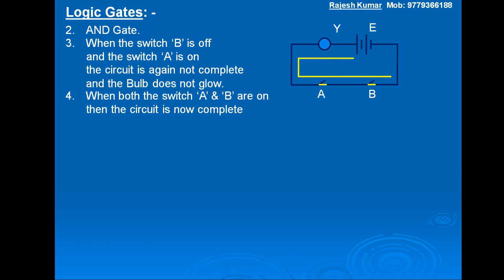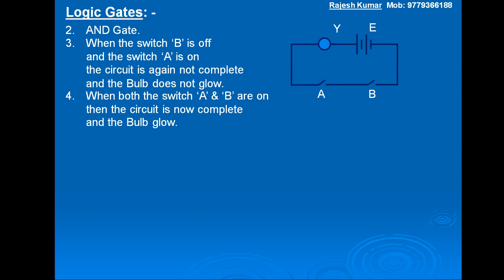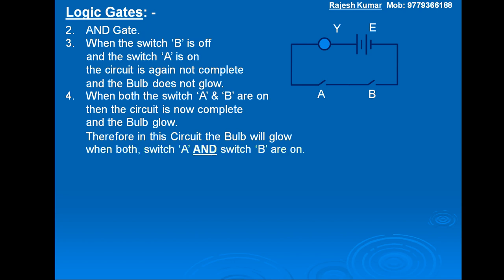See in the diagram, the circuit is now complete and the bulb glows. So these are the four cases. Therefore, in this circuit the bulb will glow when both switch A and switch B are on. Therefore, this circuit represents an AND gate for two inputs.